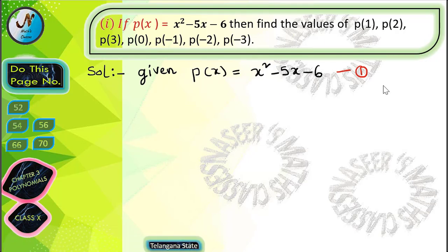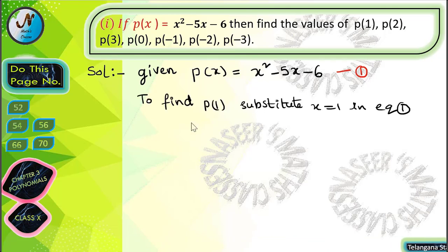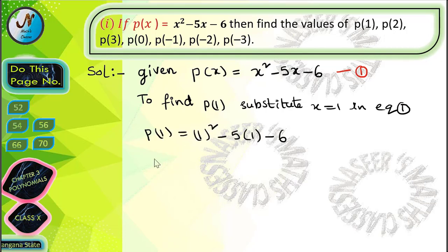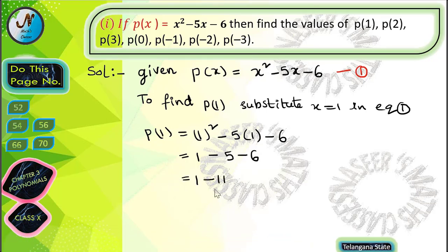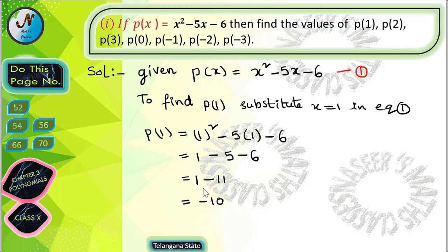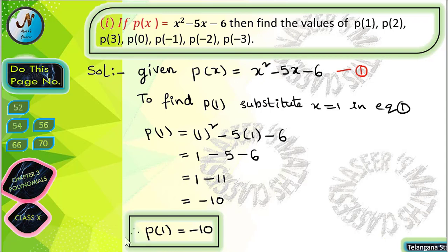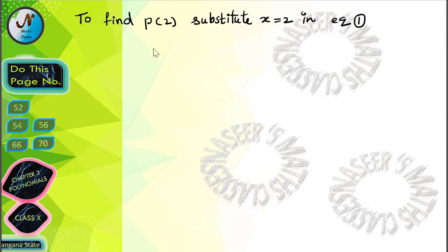To find p(1), substitute x is equal to 1 in equation 1. After substituting, we get p(1) is equal to 1 square minus 5 into 1 minus 6. After simplification, 1 square is 1, and 5 into 1 is 5, so we get 1 minus 11, which equals minus 10. Therefore, p(1) is equal to minus 10.